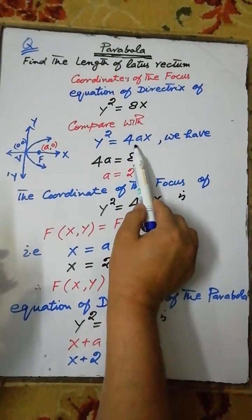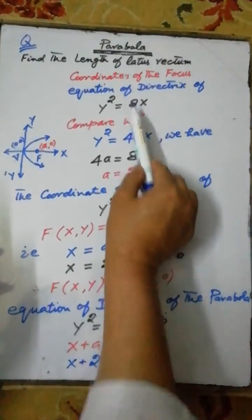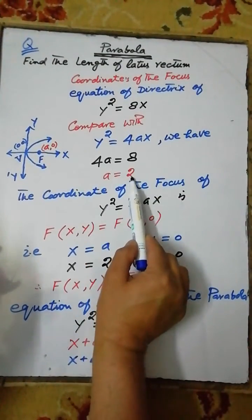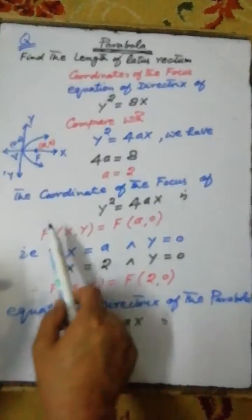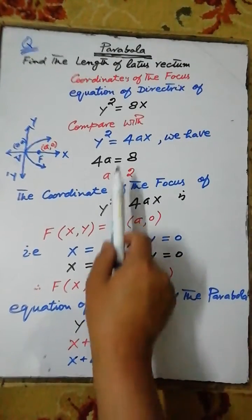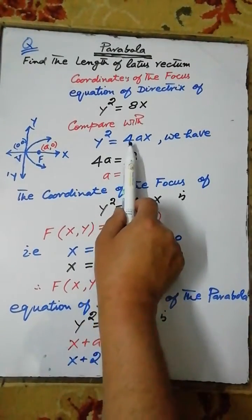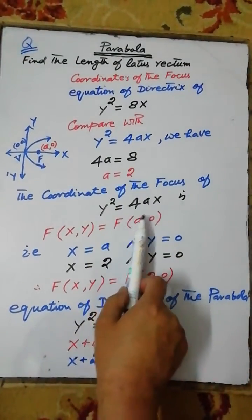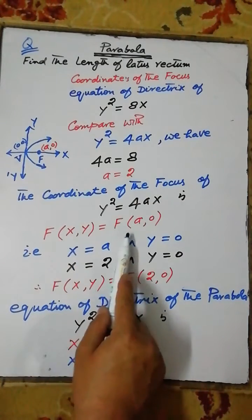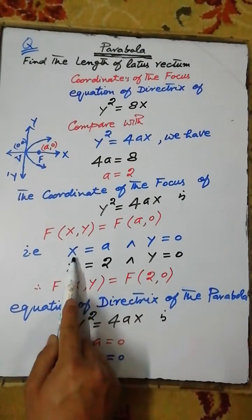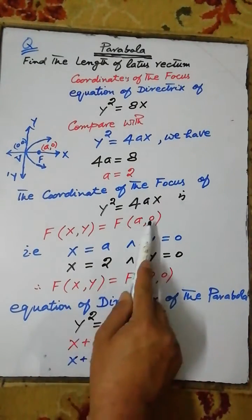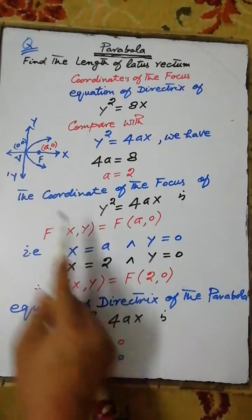Therefore, 4a is equal to 8, so a is equal to 2. Now, the coordinate of the focus of the parabola y squared equals 4ax is x equals a and y equals 0.